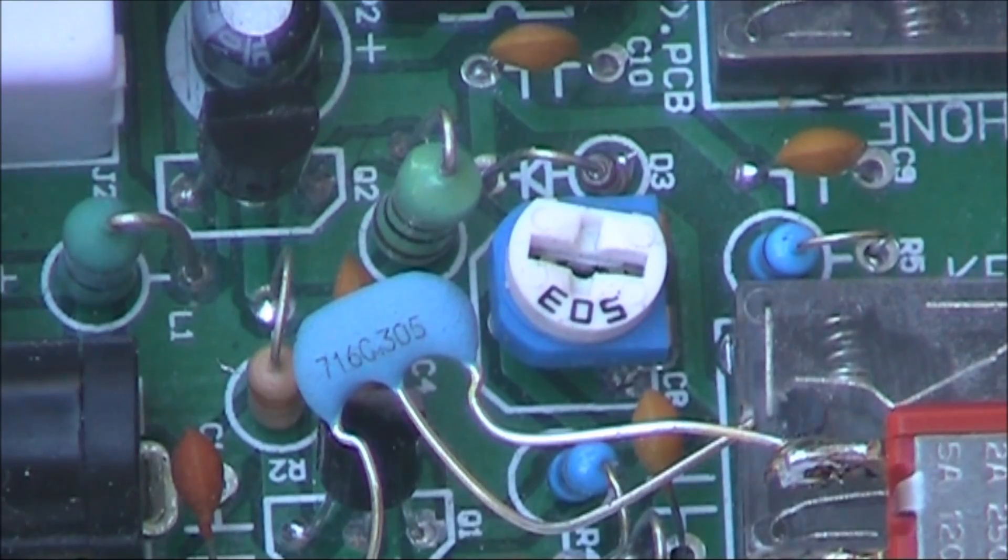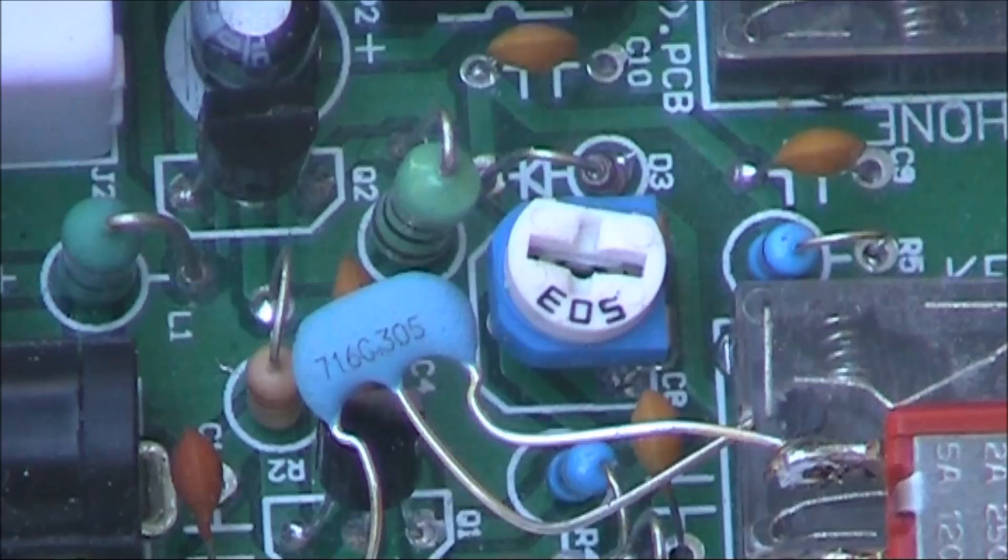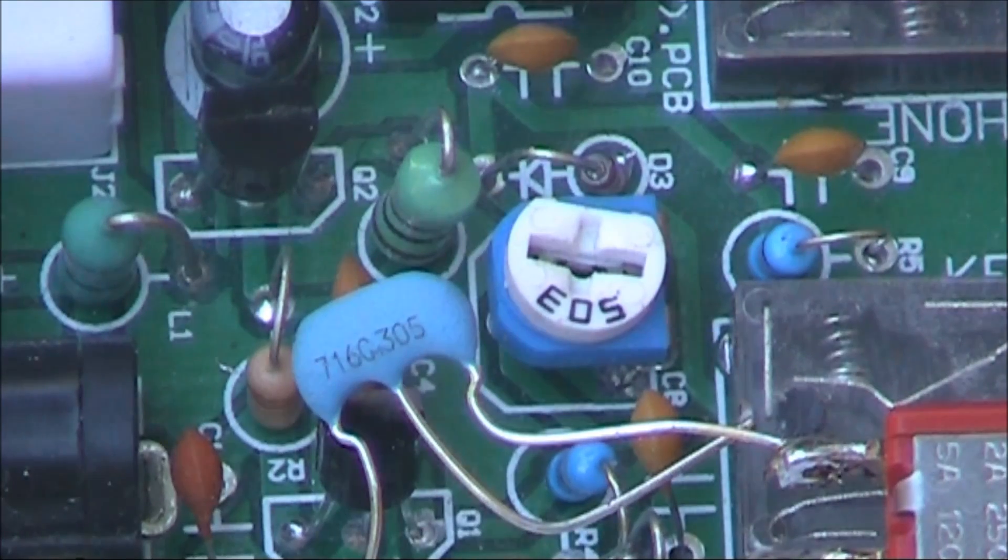And if you vary the frequency with a VXO, you'll get a different offset result. Still, if you wanted to use this rig for SOTA, or summits of the air, where most of the activity is around 7.090, you could set the trim pot so it's optimised to transmit with an 800 hertz offset on that frequency.